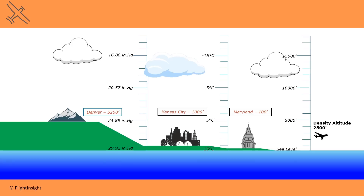The fantasy land, or standard conditions, is always the same: 15 degrees Celsius at sea level, dropping 2 degrees Celsius for each thousand feet climbed, and 29.92 inches of mercury air pressure at sea level.